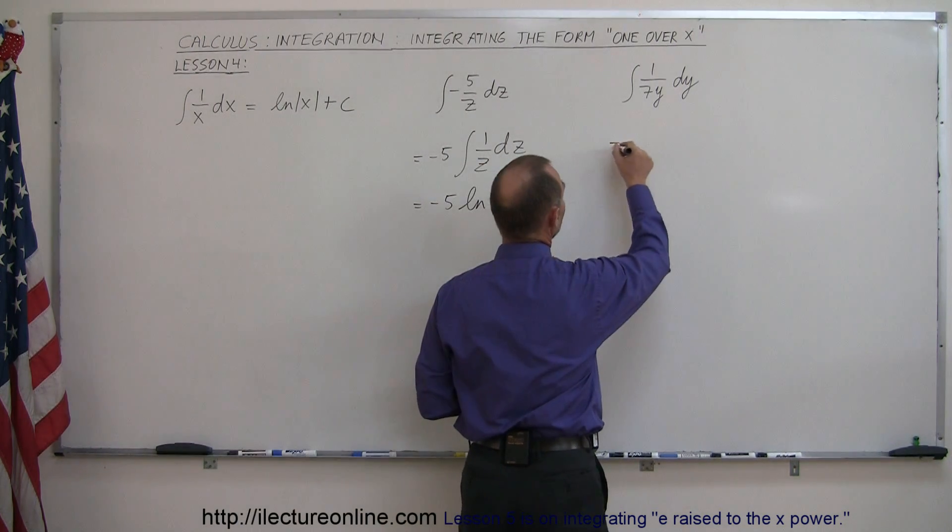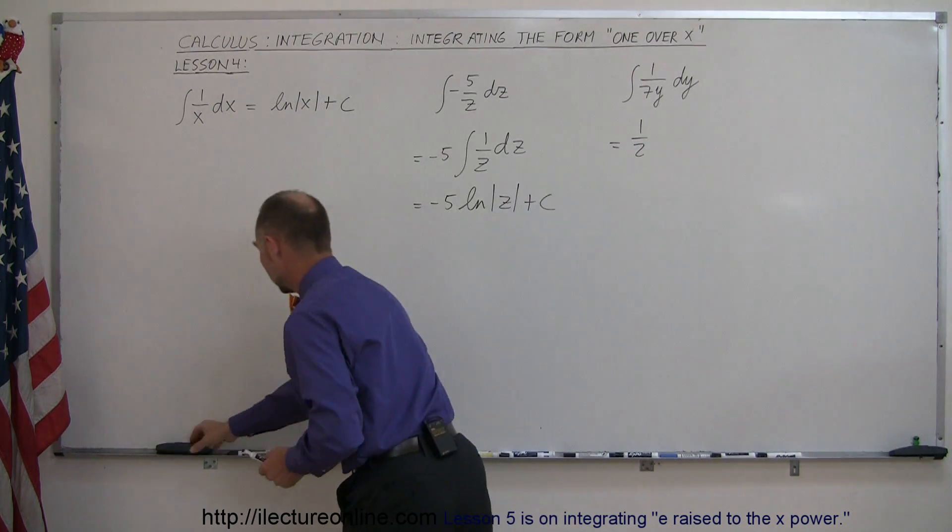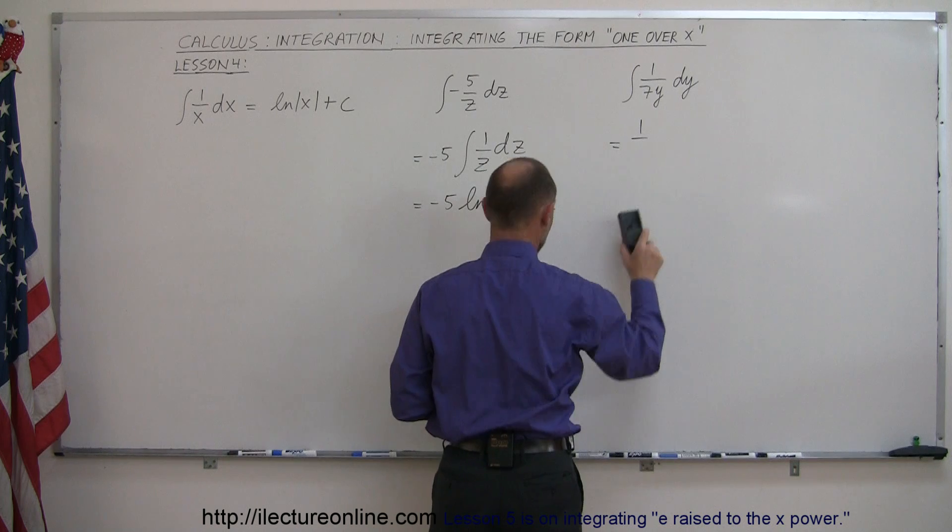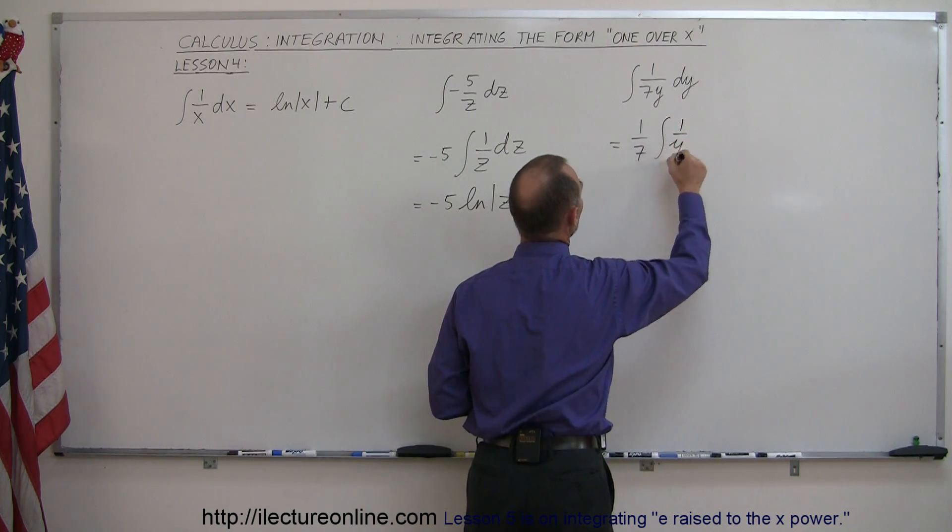we have an example like that. First of all, we take 1 over 7 out of the integral sign. I wanted to write 7, not z, so let's correct that. So 1 over 7 times the integral of 1 over y dy.